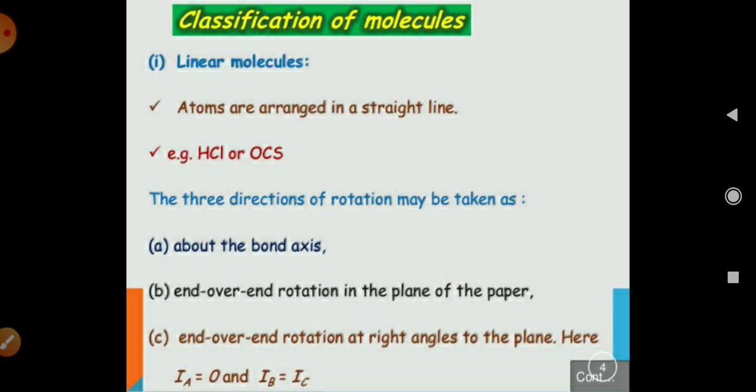What is the classification of molecules? The first is linear molecules. HCl is a linear molecule and its atoms are arranged in a straight line. The three different rotations may be taken as about the bond axis, end-over-end rotation in the plane of the paper, and end-over-end rotation at an angle to the plane. Here, Ia equals 0 and Ib and Ic are equal to each other.